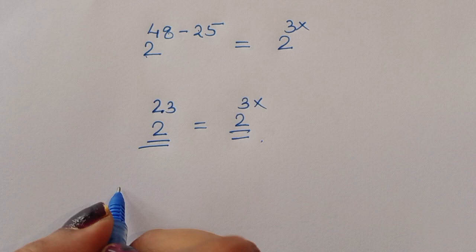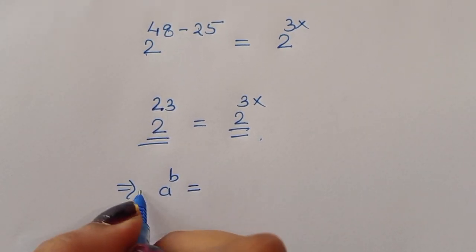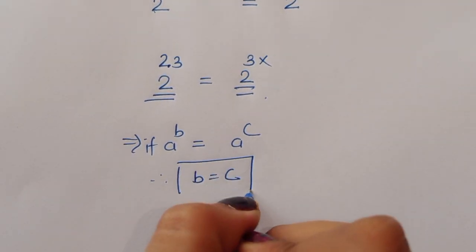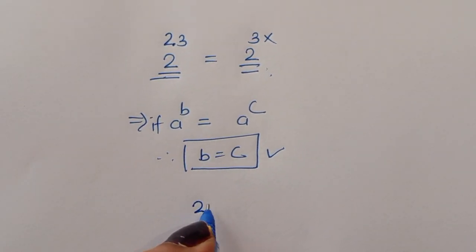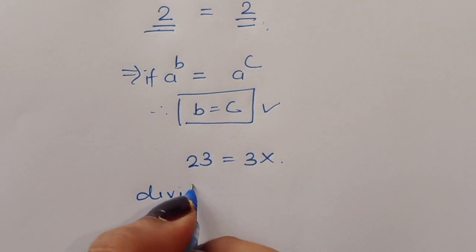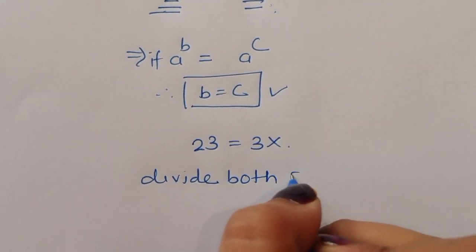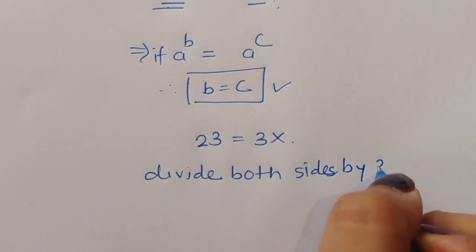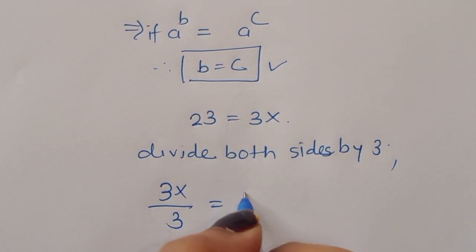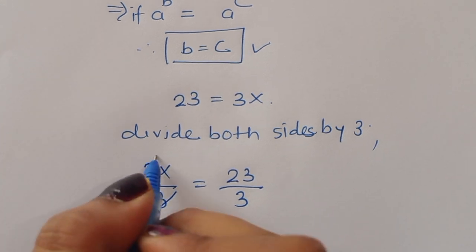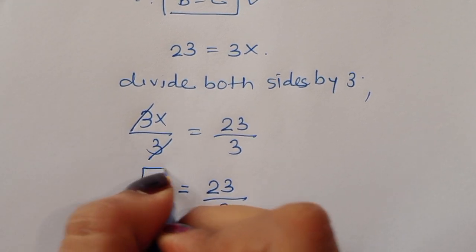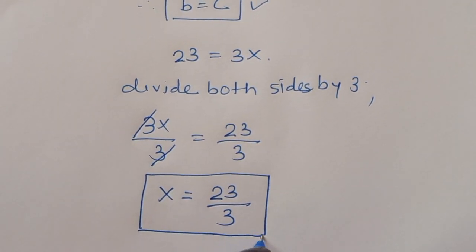Since the bases are the same, we use the formula: if a power b equals a power c, then b equals c. So 23 equals 3x. Dividing both sides by 3, x equals 23 divided by 3. This is the value of x. This is the solution.